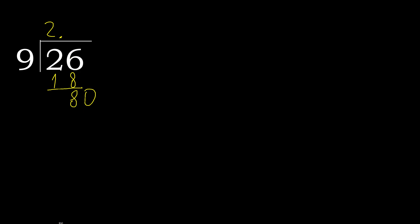9 multiplied by 9 is 81, which is greater. Multiplied by 8: 72. Subtract.